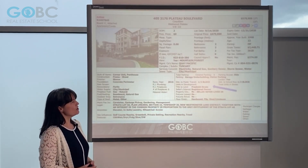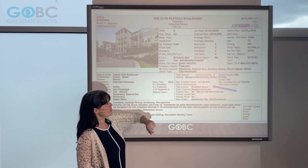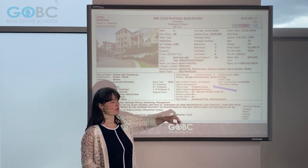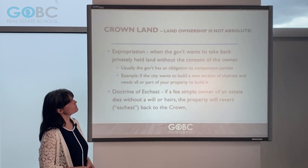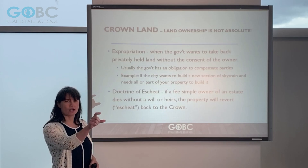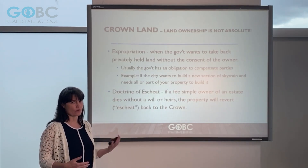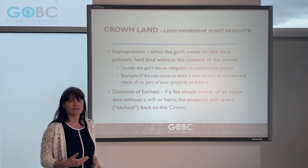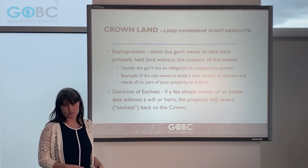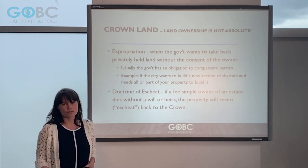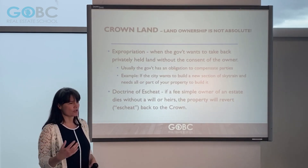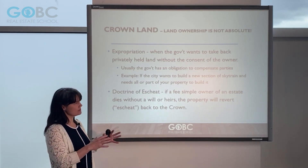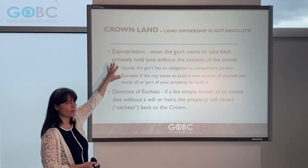Here you can see an MLS listing as an example where the title is listed as freehold ownership — it's a strata property but it is a freehold fee simple ownership. The reason we mention crown land is that land ownership is ultimately owned by the crown in BC. The government ultimately owns the property and there are a couple of ways they can actually gain back that ownership.